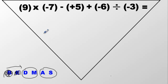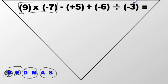Division and multiplication — whichever one comes first. I'm going to underline this and put a box around it. We have to solve this one first. Nine times negative seven — that's a positive times a negative, which always makes a negative. Nine times seven is 63, so the answer is negative 63. Everything else drops down.